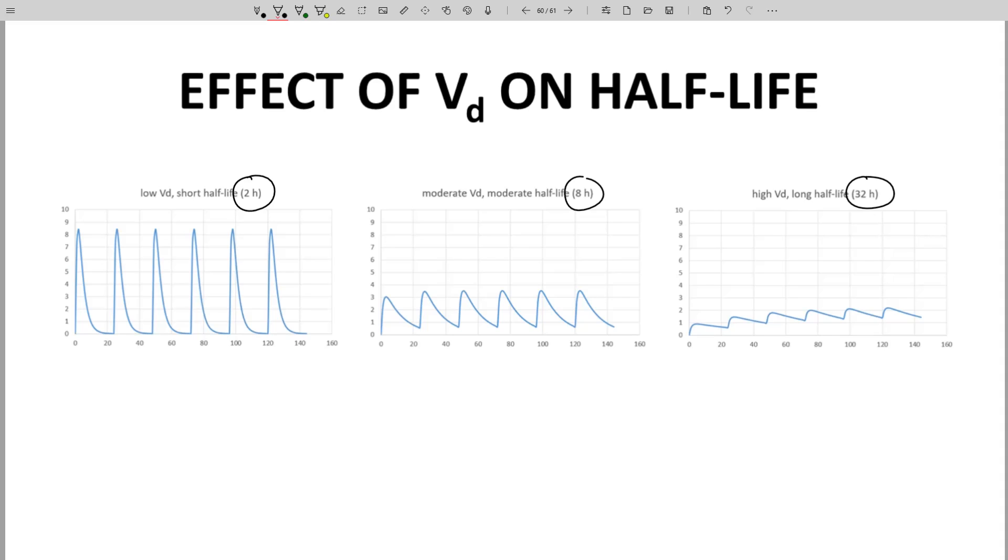As volume of distribution gets bigger, half-life gets longer. All three are dosed once per day, the x and y axes are the same, and the dose sizes are the same. These curves are really different. Notice how the floor and ceiling of the CP values differ for these various half-lives.